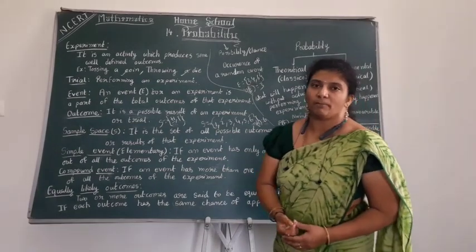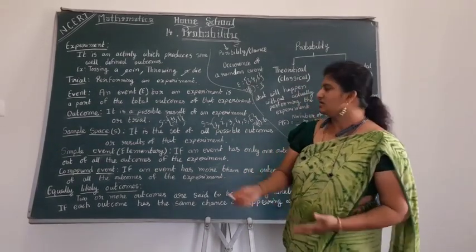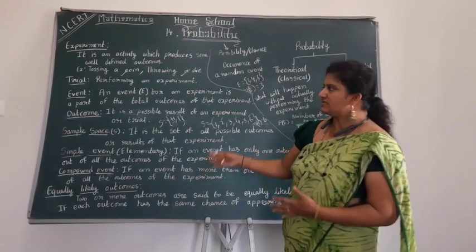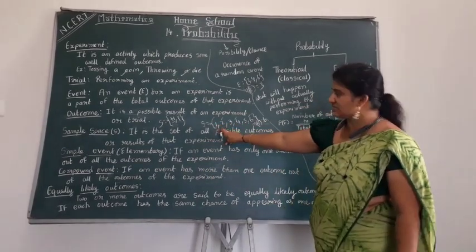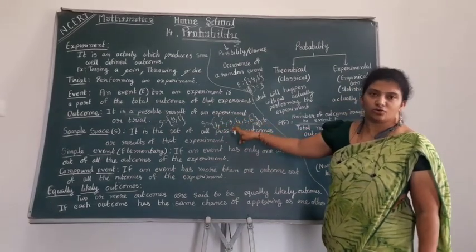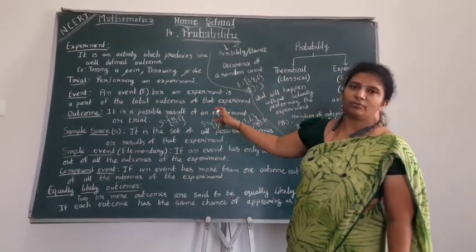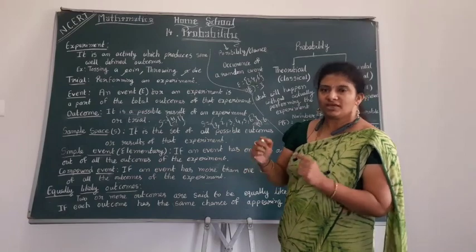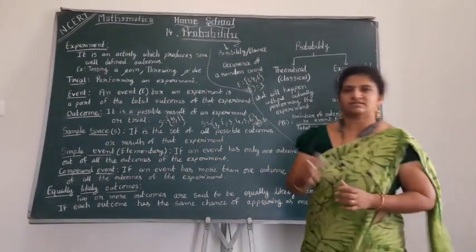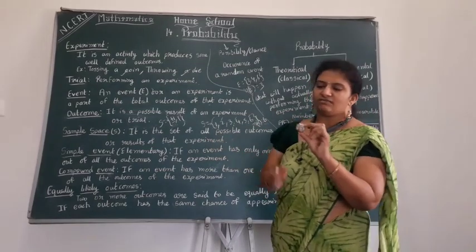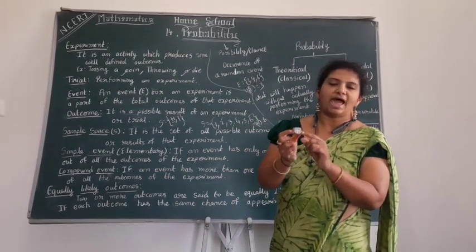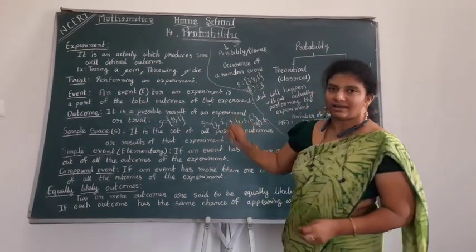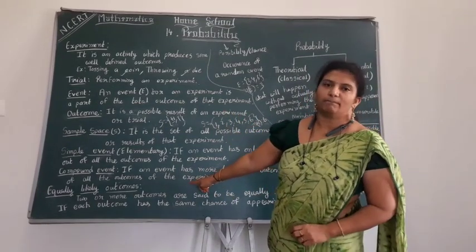Next, what is a compound event? It involves having multiple answers. If an event has more than one outcome out of all outcomes of the experiment, it is a compound event. For example, when throwing a die with sample space {1, 2, 3, 4, 5, 6}, the probability of getting even numbers gives outcomes 2, 4, and 6 — three chances. Having multiple answers is called a compound event.